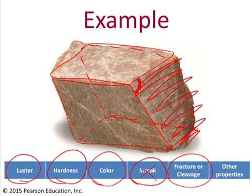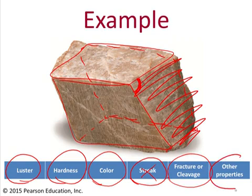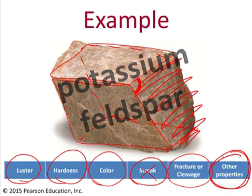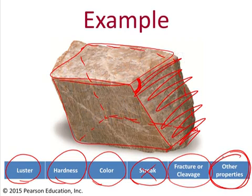It's got to be one of the two feldspars. So if we want to distinguish between potassium feldspar and plagioclase feldspar, we want to look for the presence of striations. We don't see any striations here, so it must be potassium feldspar.